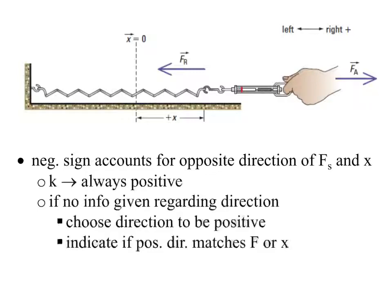So, just choose one of them to be positive and one will be negative — that's just how it goes. And if you get a negative answer, then you know that it's going in a negative direction, and if you get a positive answer, you know it's going in the positive direction. That's why we have the negative sign there — because force and displacement will always be in opposite directions when we're talking about the displacement of a spring.